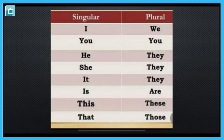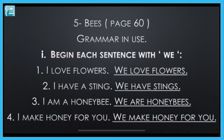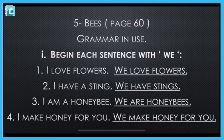Moving on to the pending exercise from the last video — Chapter 5, Bees, page number 60, Grammar in Use. First question: begin each sentence with 'We'. Aapko har ek sentence 'We' se start karna hai. The first sentence is 'I love flowers' — you have to replace 'I' with 'We', so the answer is 'We love flowers'.